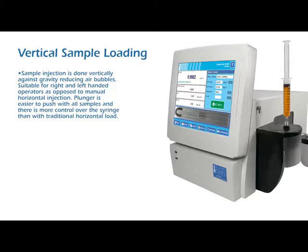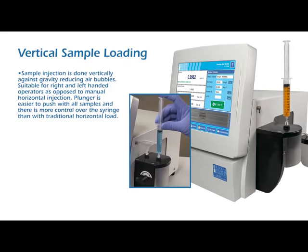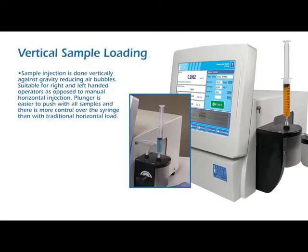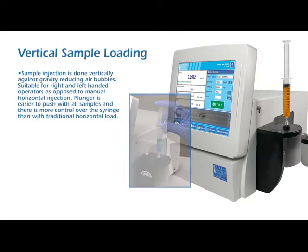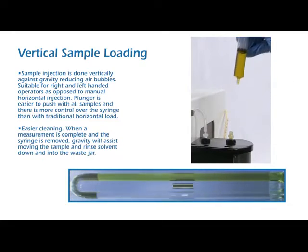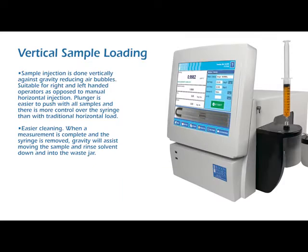Vertical sample loading: sample injection is done vertically against gravity, reducing air bubbles. Suitable for right and left-handed operators as opposed to manual horizontal injection. The plunger is easier to push with all samples and there is more control over the syringe than with traditional horizontal loading. Easier cleaning: when a measurement is complete and the syringe is removed, gravity will assist moving the sample and rinse solvent down and into the waste jar.